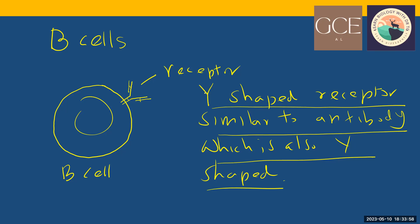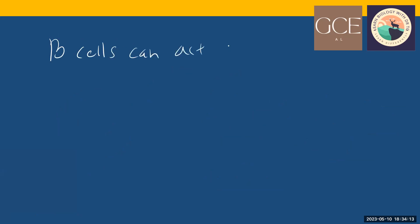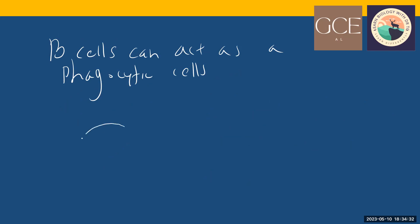The B-cell has another function: B-cells can act as phagocytic cells. What a phagocytic cell does — it can engulf and identify the pathogen. Let's say this represents a bacteria, and the bacteria has an antigen recognized by this B-cell receptor.